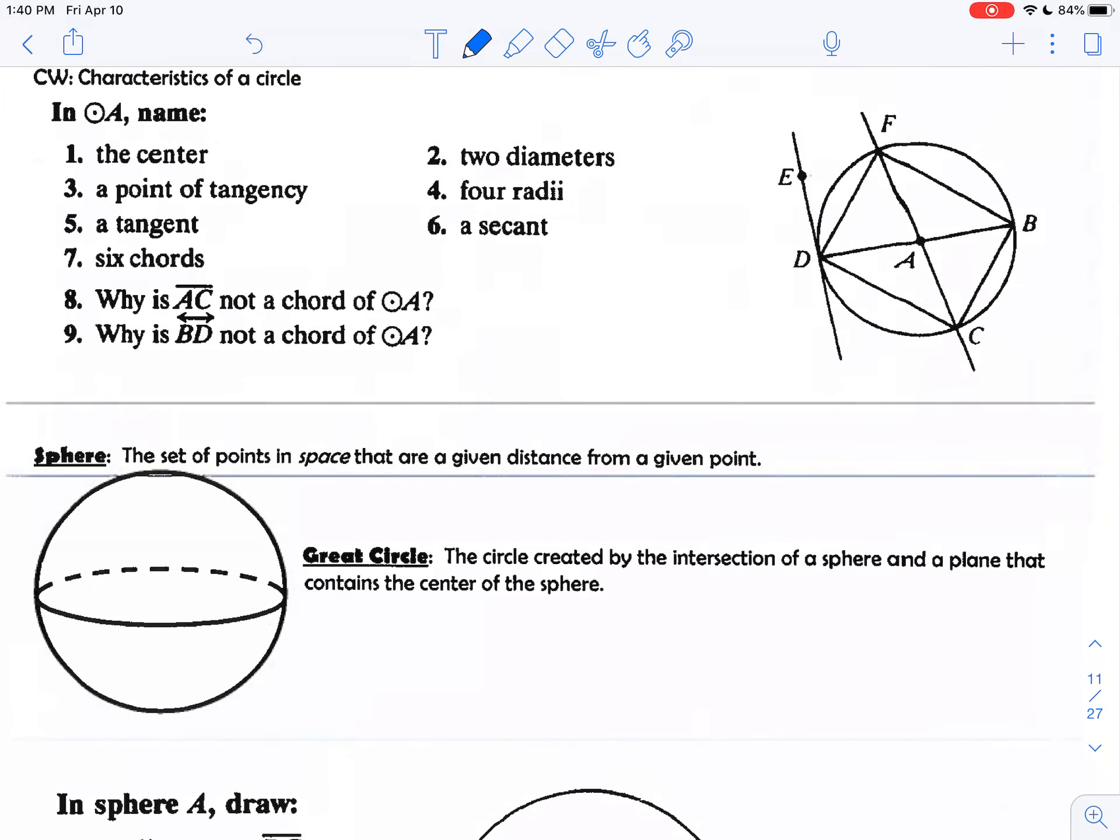Let's go through a few examples here. In circle A, we're going to identify certain things. If you want to hit pause and try to fill this out and see what you get, check your answers with 1 through 9 here.